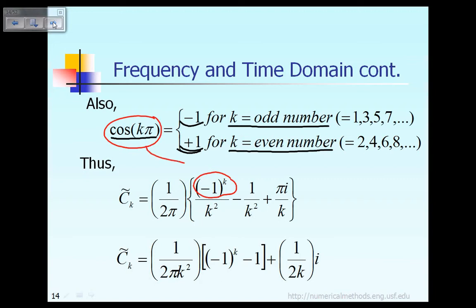The reason this term can be expressed like that is because, as you can see, if k is an even number, like 2, 4, 6, 8, then minus 1 raised to the power k is equal to positive 1. But on the other hand, if k is an odd number, then minus 1 raised to the power k will be equal to a negative value. So cosine of k pi can be expressed as minus 1 raised to the power k.